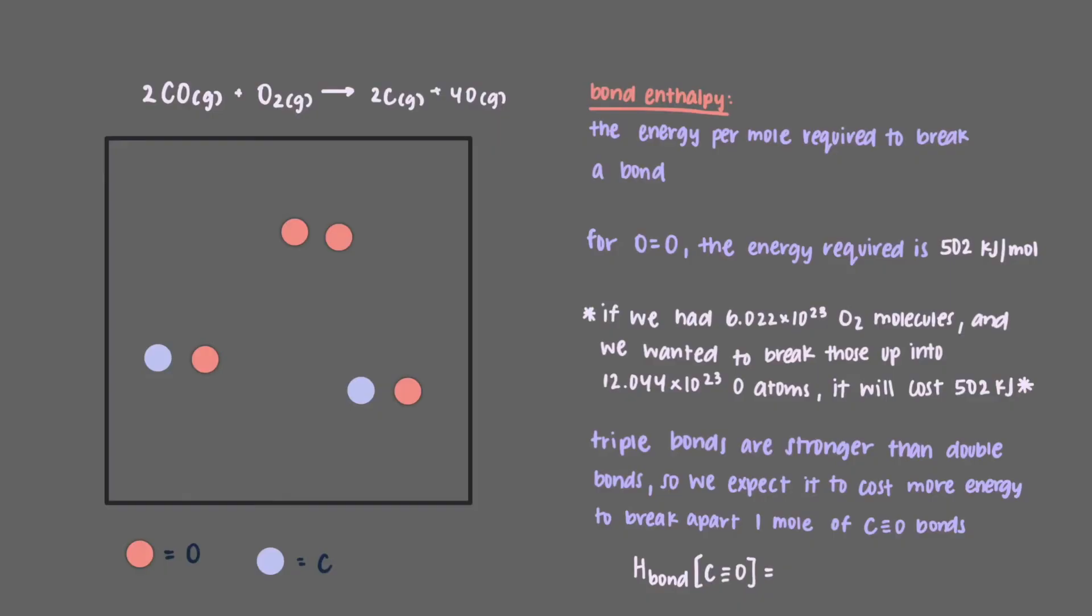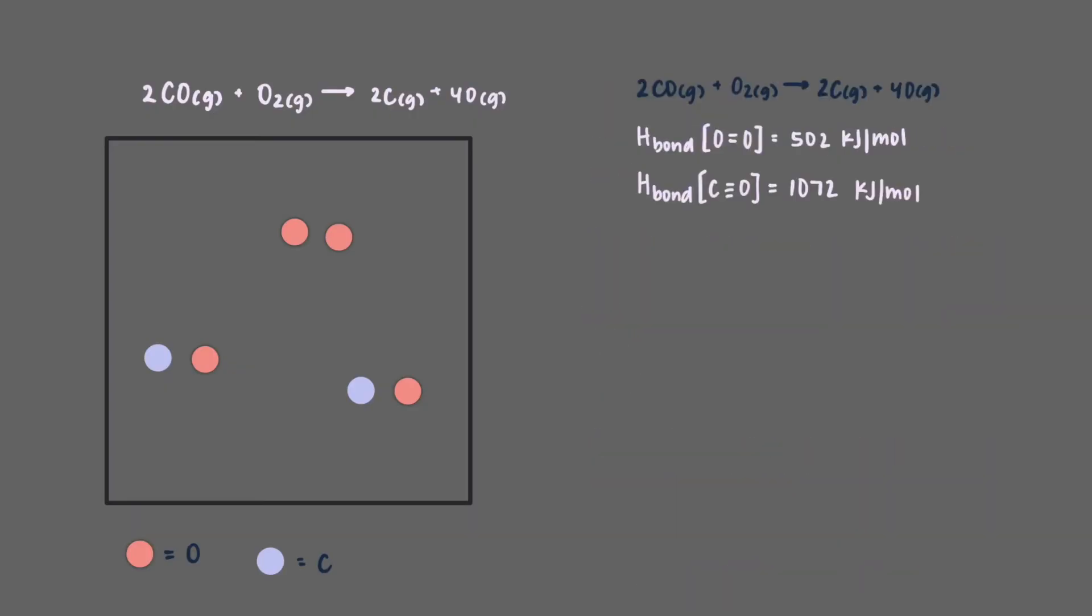The bond enthalpy of a carbon-oxygen triple bond is 1072 kilojoules per mole. That means that the energy of the first step, the bond-breaking step, is equal to 2 times the bond enthalpy of the carbon-oxygen triple bond plus the bond enthalpy of the oxygen-oxygen double bond. The delta H of this step is equal to 2646 kilojoules per mole.